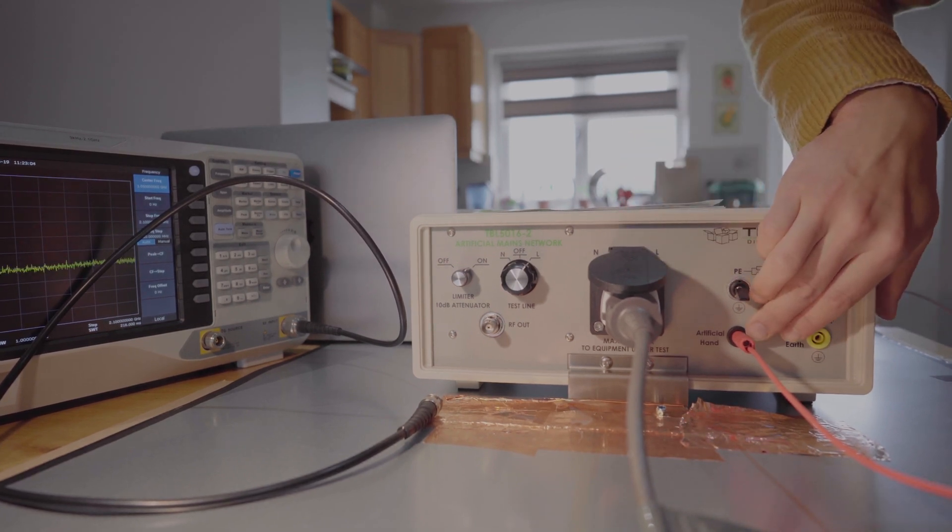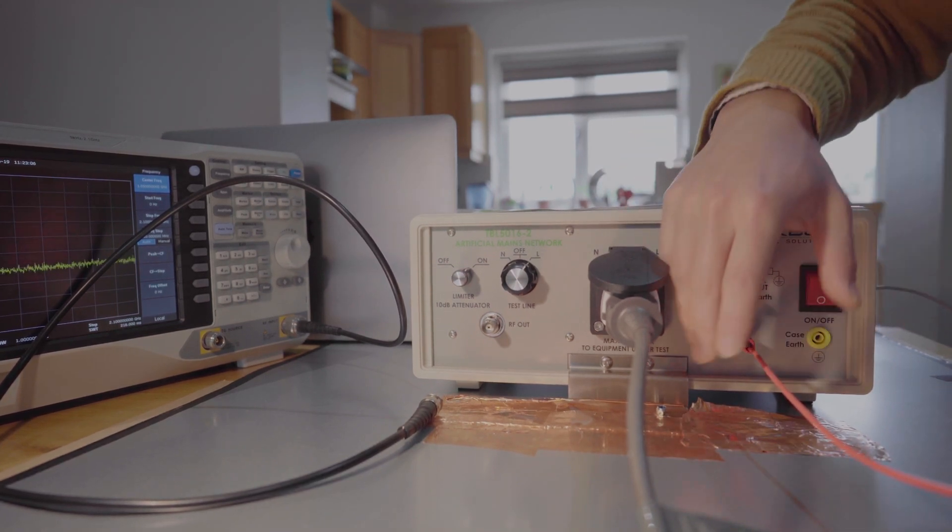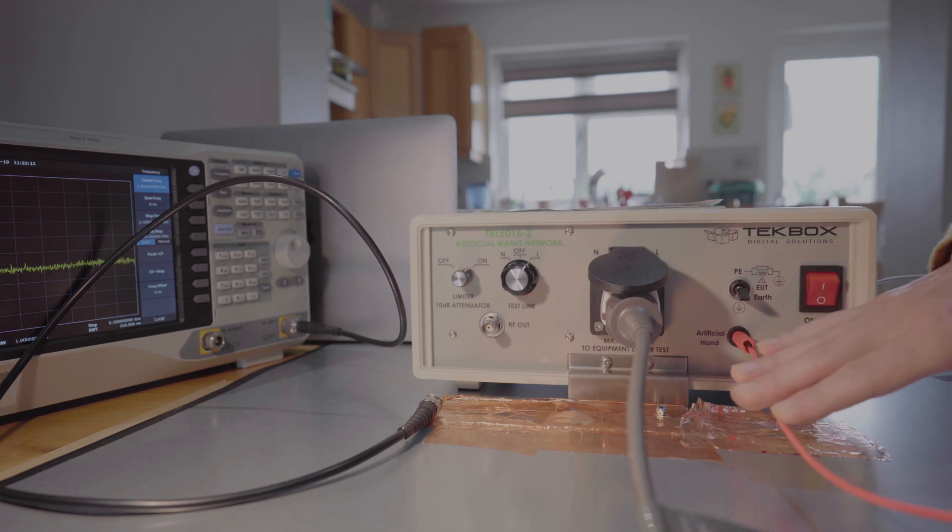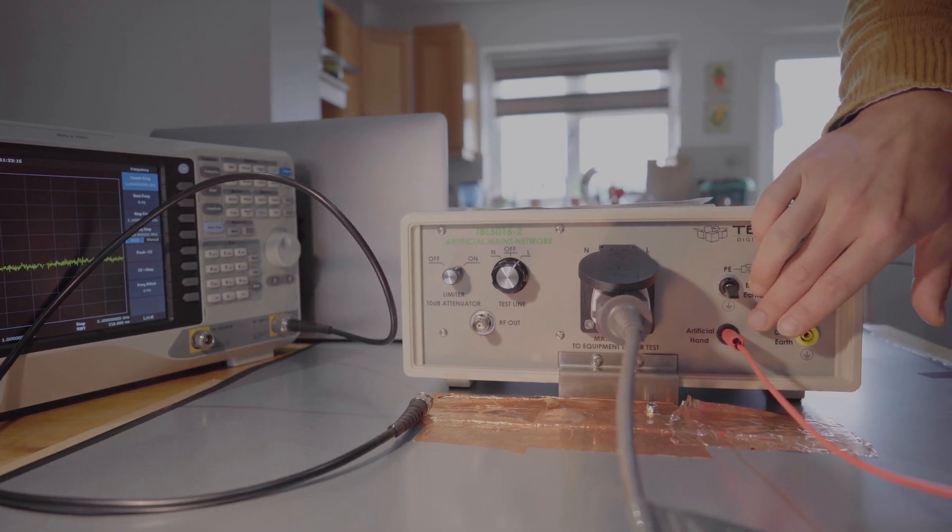Here you have your mains power out connected to your DUT. Here we are using an artificial hand because this product, as I said, is a hairdryer. And by testing standards, you will need an artificial hand.